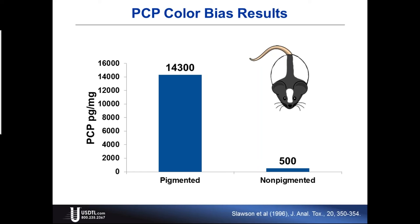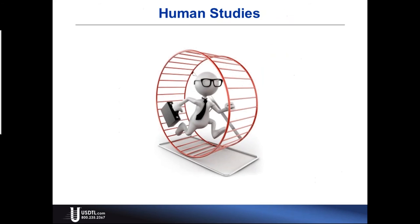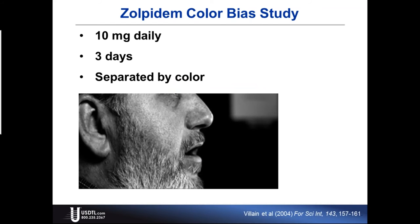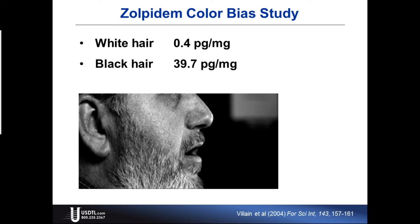Talking about rat hair is one thing, but we obviously test humans. Do these observations carry forward into human hair? A good study published in 2004 looked at individuals given 10 milligrams daily of zolpidem — you know this as Ambien — for three days. These individuals had salt-and-pepper or grizzled hair with both dark and gray strands. They separated the specimens by color and analyzed them. The non-pigmented hair had 0.4 picograms per milligram of zolpidem, and the black hair had 39 — an 80-fold difference in concentration based on color, from the same individual taking the same doses for the same period of time.